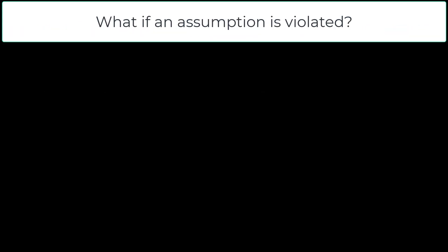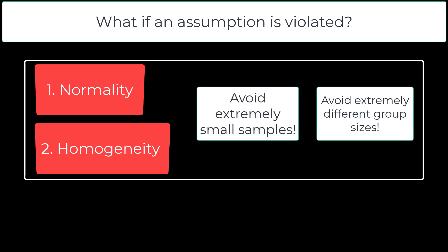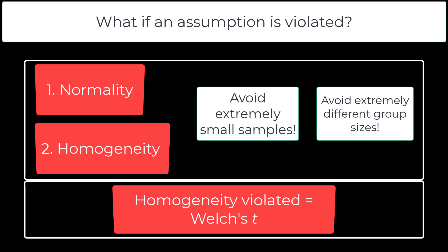What if an assumption is violated? The T-Test is generally robust to violations of assumptions of normality and homogeneity unless sample sizes are extremely small or group sizes are extremely different in size. If equal variance is not assumed, researchers can use the Welch's T, which is a more conservative test.